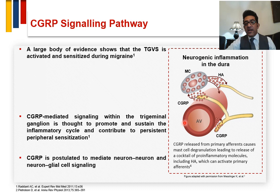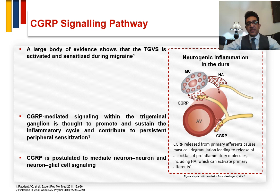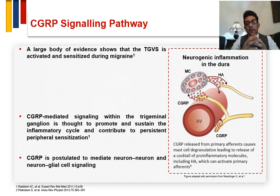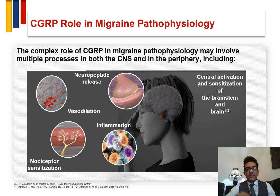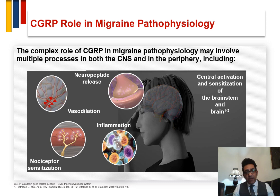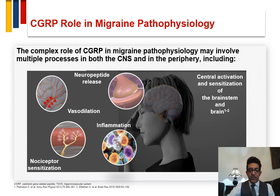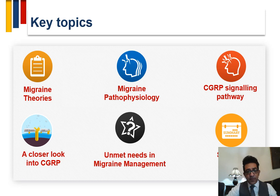CGRP is responsible for the vasodilatation that occurs in the meningeal vessels. After activation of the trigeminal ganglion, impulses are sent to peripheral terminals, which release CGRP from the nerve terminal into the meningeal perivascular space, leading to vasodilatation. CGRP is not only involved in vasodilatation but also in neurogenic inflammation through degranulation of mast cells and release of pro-inflammatory mediators.